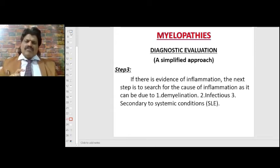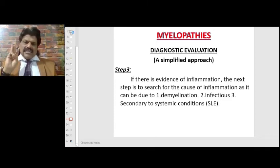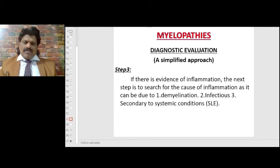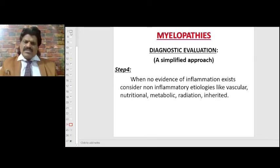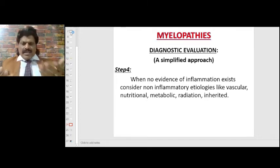Step three: if there is evidence of inflammation, search for the cause — it may be due to demyelination, infections, or secondary to systemic causes like systemic lupus erythematosus. Step four: if there is no evidence of inflammation, consider non-inflammatory etiologies like vascular causes, nutritional deficiency such as vitamin B12, metabolic, radiation, or inherited disorders.